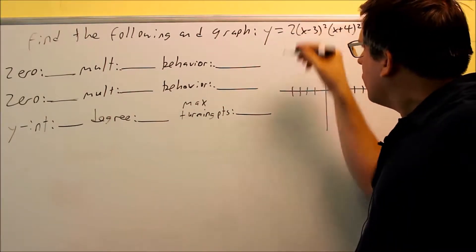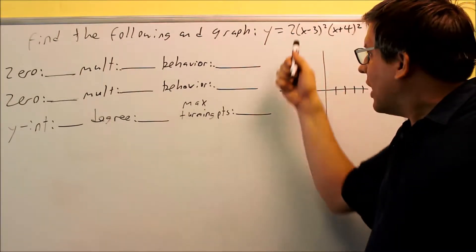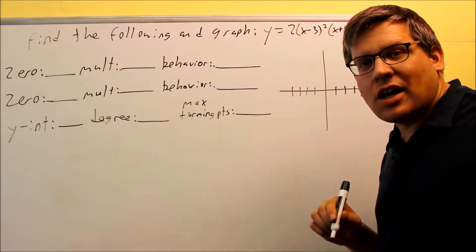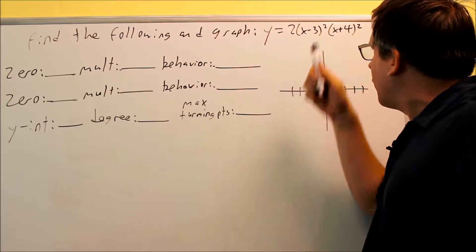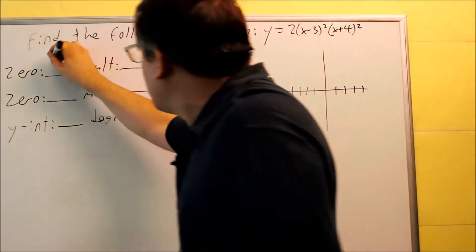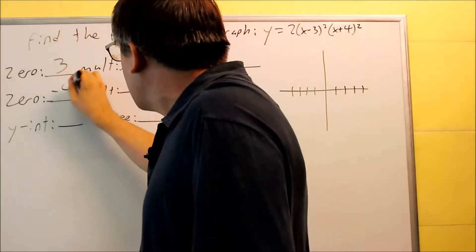First of all, the first one, the 2 here, I can't have a zero on that one because I can't set 2 equal to 0. 2 is never going to be equal to 0. So I'm not going to have any zero for that one, but I will have some for these two here. What makes that one 0 is going to be 3, so I'll put 3 right here. For the other one, it's going to be negative 4.